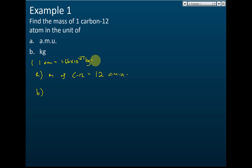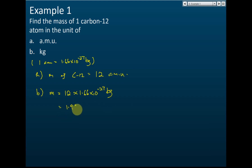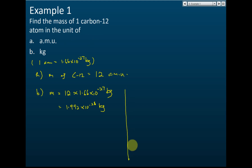If they give you one AMU equals 1.66 times 10 to the power of negative 27 kg, then the mass of carbon-12 is 12 multiplied by 1.66 times 10 to the power of negative 27 kg, which equals 1.992 times 10 to the power of negative 26 kg. But if this conversion is not given, we use chemistry knowledge: one mole of carbon-12 atoms equals 12.000 grams — this is the molar mass of carbon.